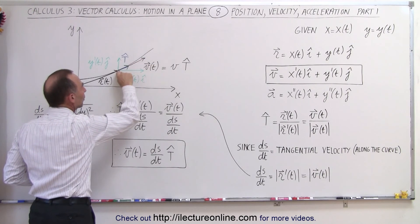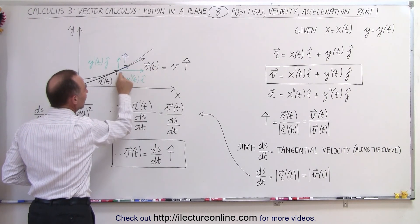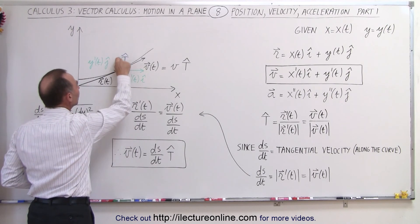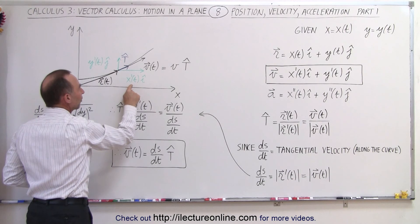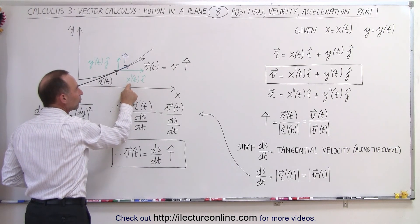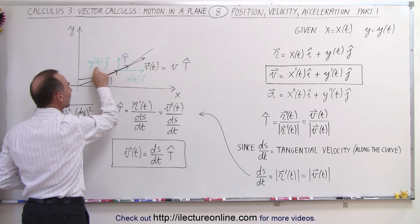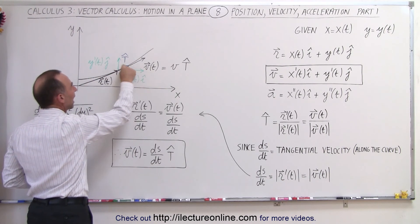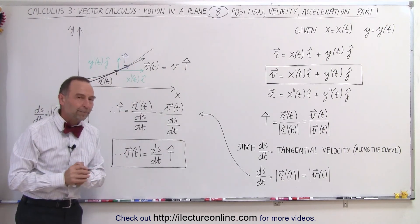If this black arrow represents the velocity vector as a function of t, then the x component and the y component of the velocity vector are found by taking the derivative of the x component and the derivative of the y component of the position vector, which gives these two components. Adding these two together gives you the velocity vector.